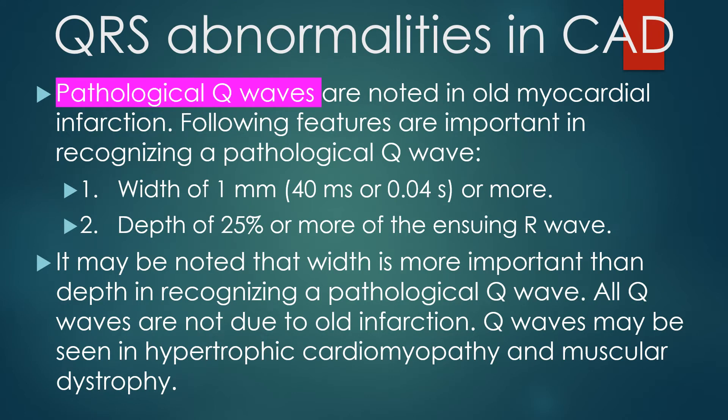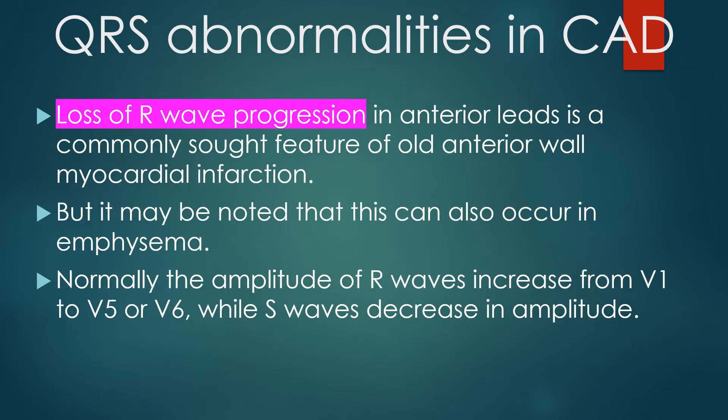Pathological Q waves are noted in old myocardial infarction. Important features for recognizing a pathological Q wave are: width of 1 mm (40 ms or 0.04 s) or more, and depth of 25% or more of the ensuing R wave — width being more important than depth. All Q waves are not due to old myocardial infarction; they may be seen in hypertrophic cardiomyopathy and muscular dystrophy. Loss of R wave progression in anterior leads is a commonly sought feature of old anterior wall myocardial infarction, though it can also occur in emphysema.